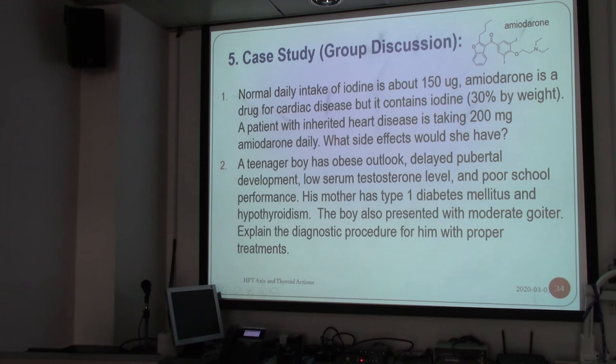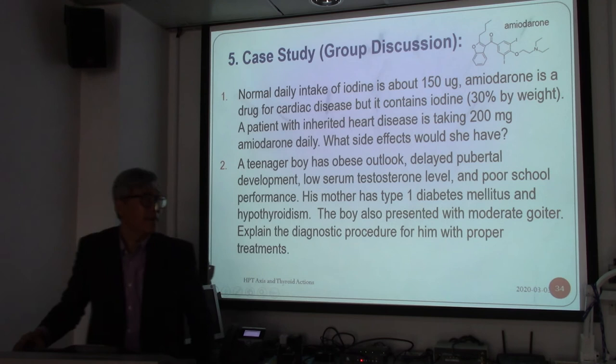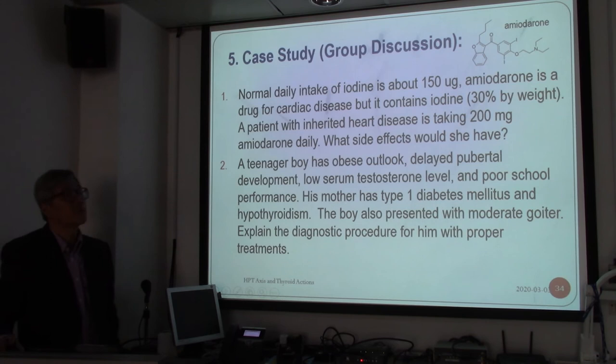The second case is a teenage boy who is obese, with delayed puberty and development, reduced serum testosterone, and poor school performance — possibly intellectually impaired. His mother has type 1 diabetes and hypothyroidism. The boy presents with moderate goiter. Explain the diagnosis procedure for him with proper diagnosis in mind.